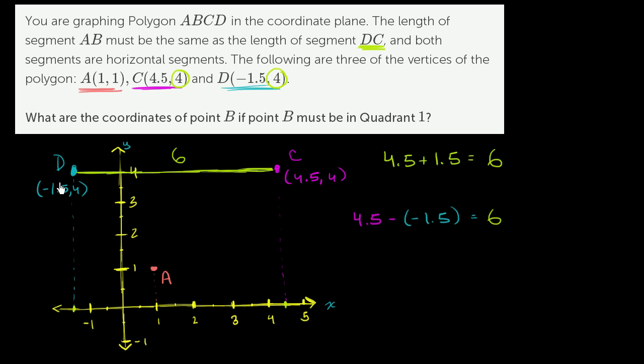Let me draw some of the rest of the polygon so we see it is indeed a polygon. We have this side right over here. It looks like it's going to be a parallelogram. We have to place point B.